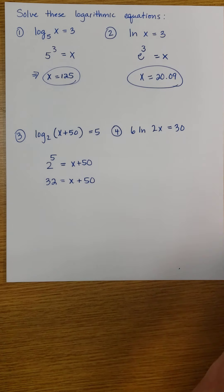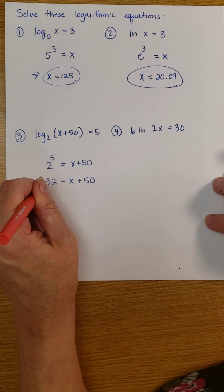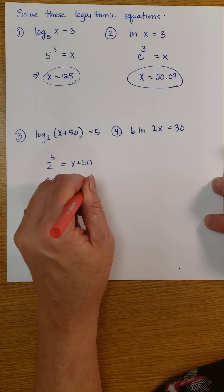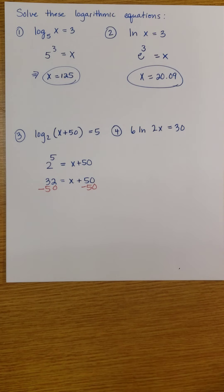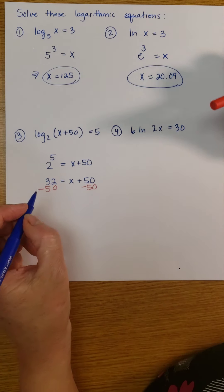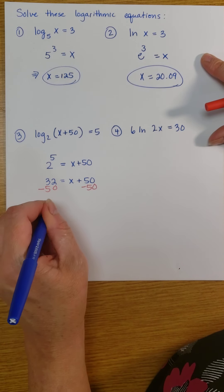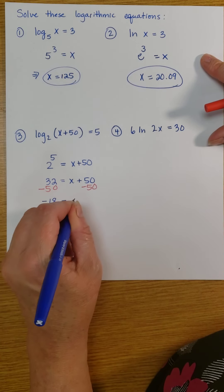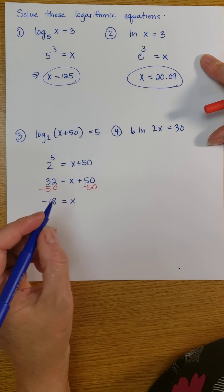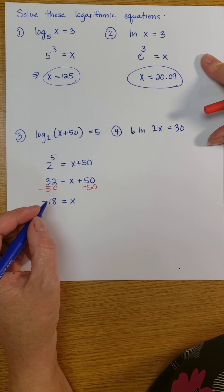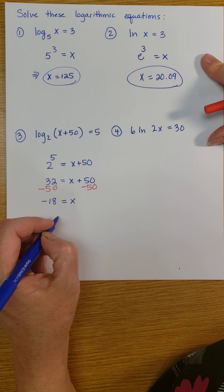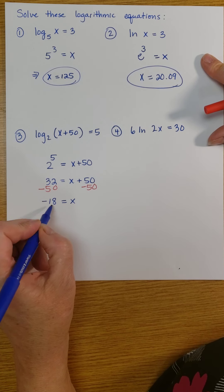So in order to solve this, I need to subtract 50 from both sides to get x by itself. And when I subtract 50 from 32, that gives me negative 18. That's my x.